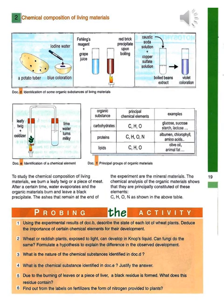The second part of this activity will identify the chemical composition of living materials produced by green plants. Document D shows the identification of some organic substances in these living organisms.